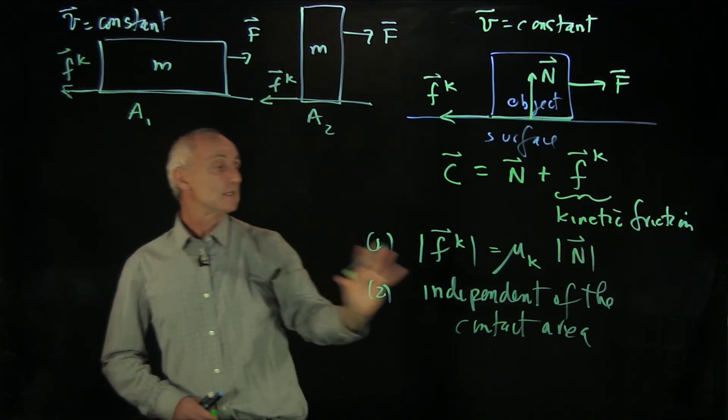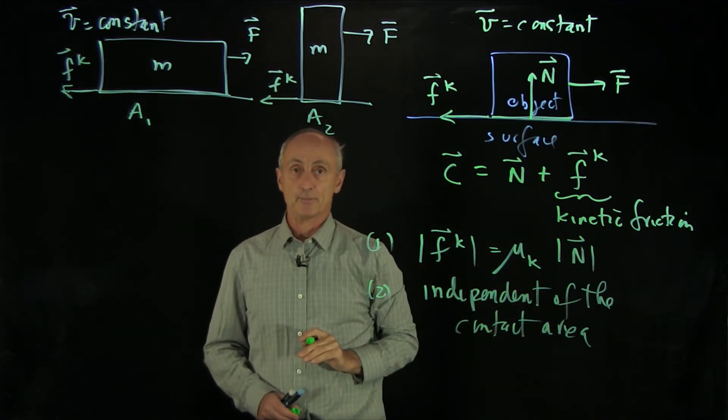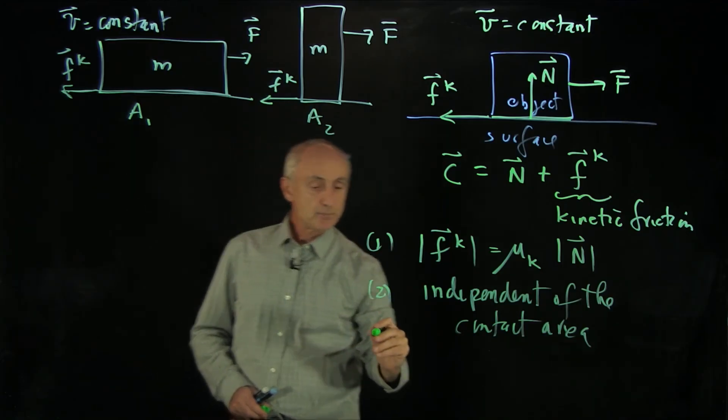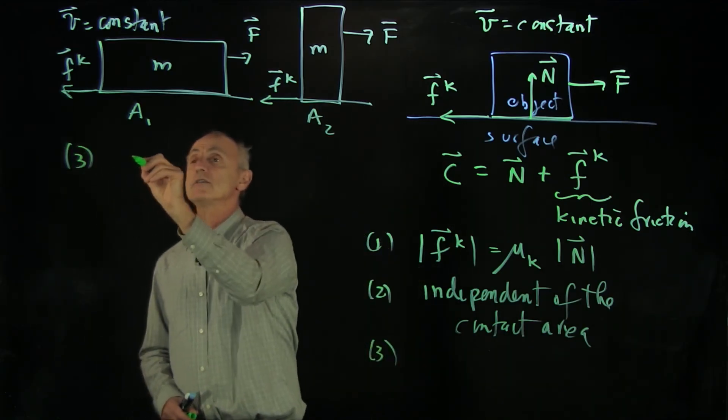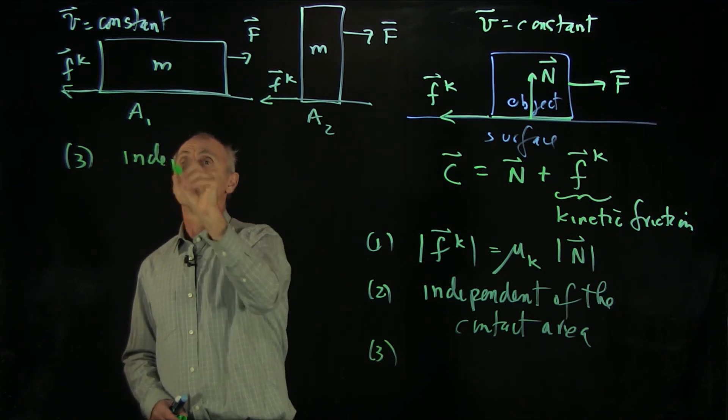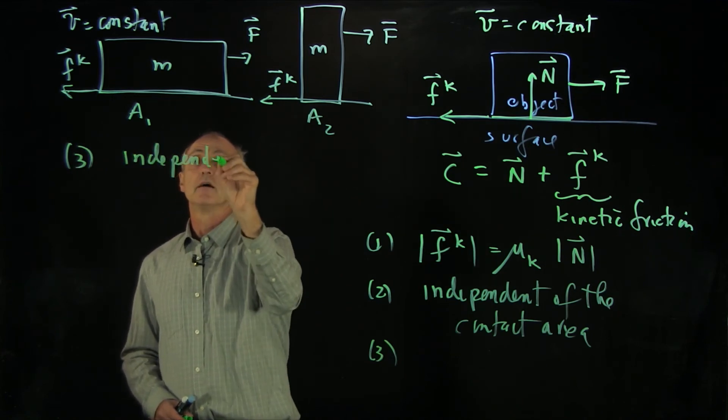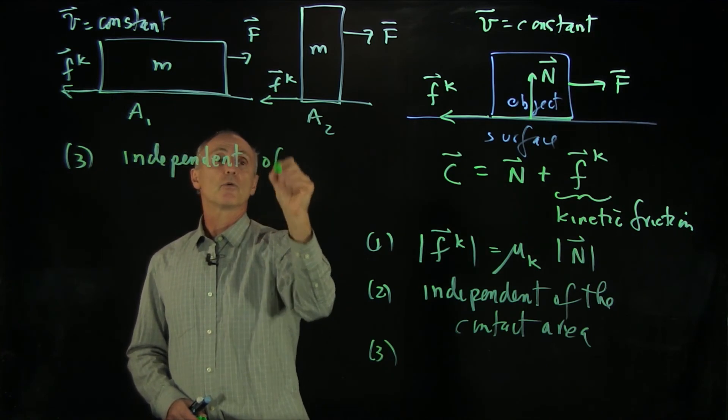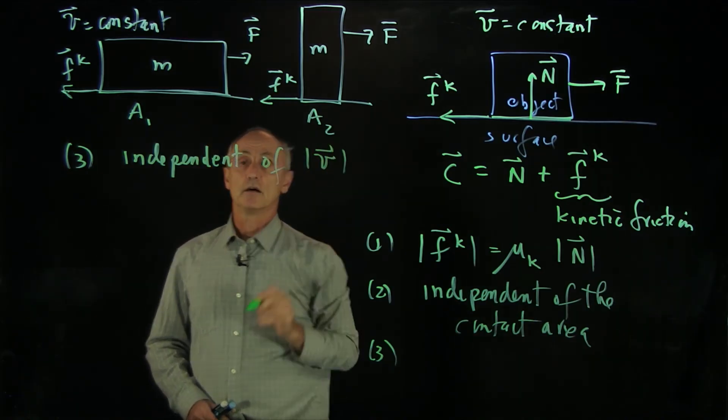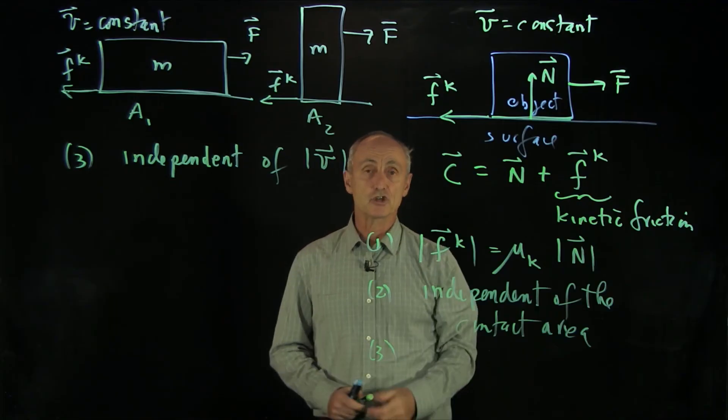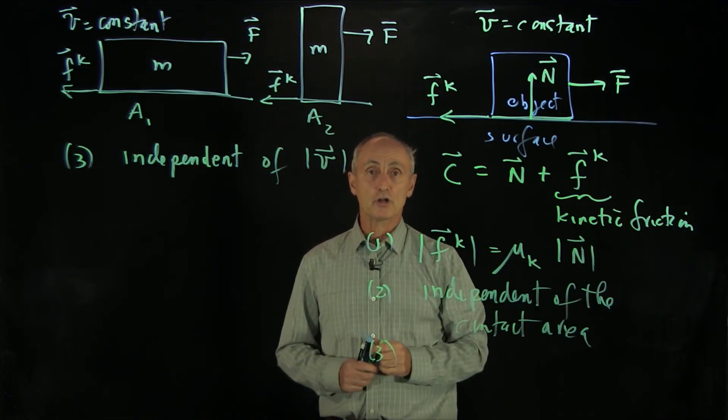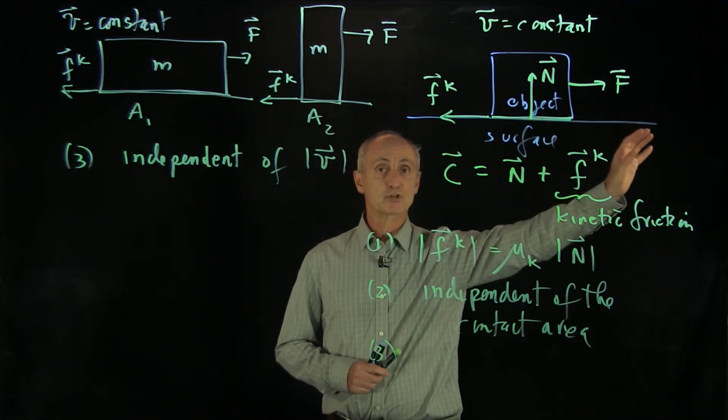And that indicates that it's independent of the contact area. And the other key property here, which we'll write over here, is that it's independent of the speed of the object. So we'll write that as independent of the velocity. And these three properties of kinetic friction are crucial for understanding the motion of objects across the surface.